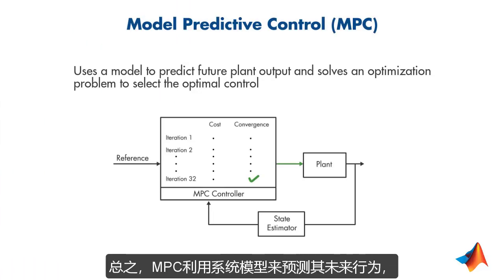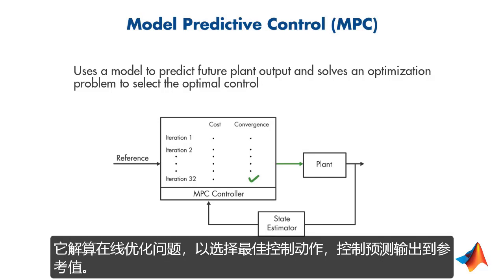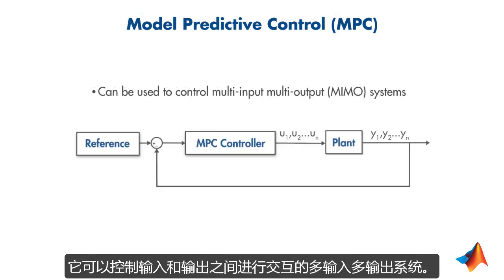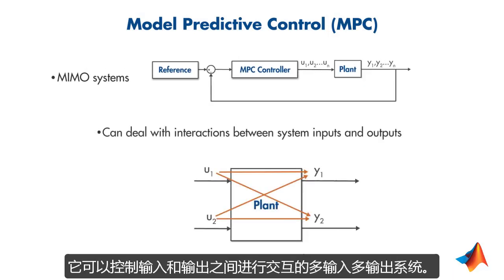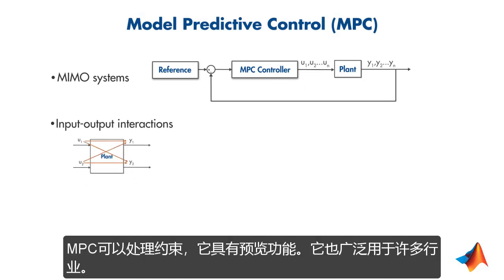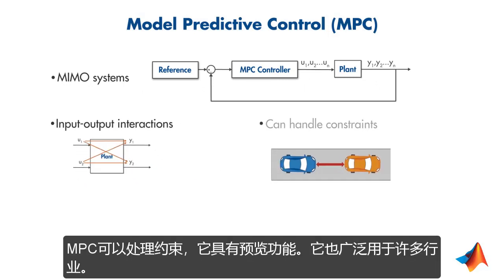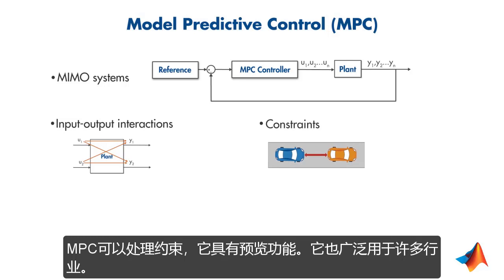In summary, MPC utilizes the model of a system to predict its future behavior, and it solves an online optimization problem to select the best control action that drives the predicted output to the reference. It can control multi-input, multi-output systems that might have interactions between inputs and outputs. MPC can handle constraints, and it has preview capability.